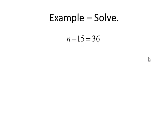What is attached to our variable? 15. How is it attached? Subtraction. How do we break subtraction? With addition. So if we add 15 on both sides, we're left with n equals 36 plus 15, or 51.